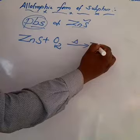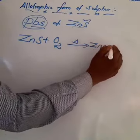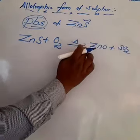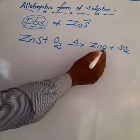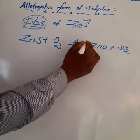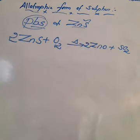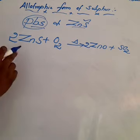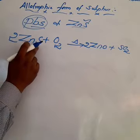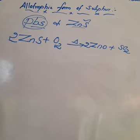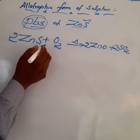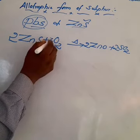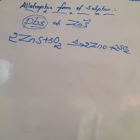Balancing the ZnS roasting equation: on the product side, make it 2ZnO, so on the reactant side make it 2ZnS. Count the sulfur — 2 sulfur on reactant side gives 2SO2. Counting oxygen: product side 2×2=4 plus 2=6, so 3O2 on the reactant side. Equation: 2ZnS + 3O2 → 2ZnO + 2SO2.